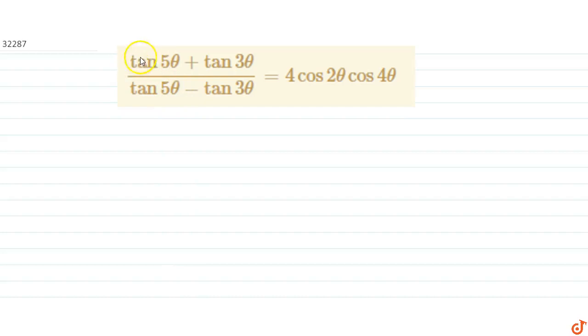In this question, we have to prove that tan 5θ plus tan 3θ divided by tan 5θ minus tan 3θ is equals to 4 cos 2θ into cos 4θ.